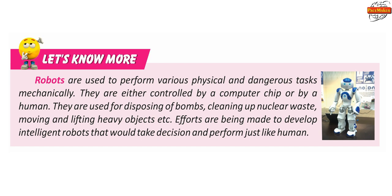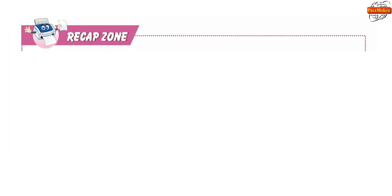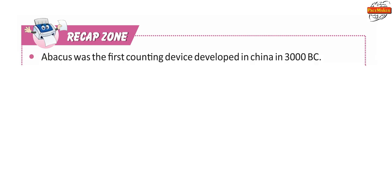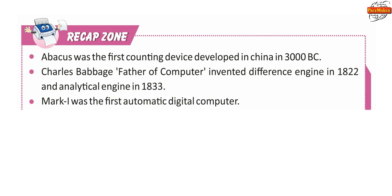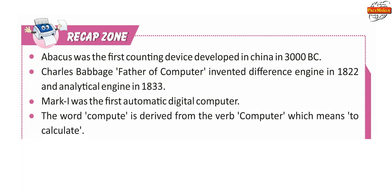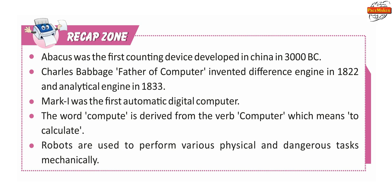Efforts are being made to develop intelligent robots that would take decisions and perform just like humans. Recap Zone: Abacus was the first counting device developed in China in 3000 BC. Charles Babbage, the father of computers, invented the Difference Engine in 1822 and the Analytical Engine in 1833. Mark I was the first automatic digital computer. The word 'computer' is derived from the verb 'compute', which means to calculate. Robots are used to perform various physical and dangerous tasks mechanically.